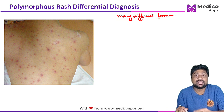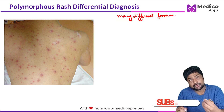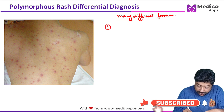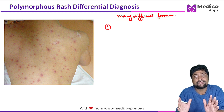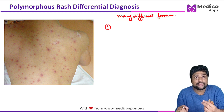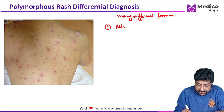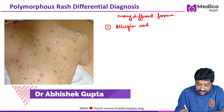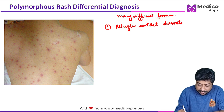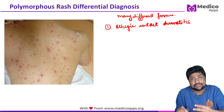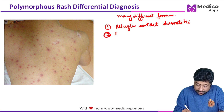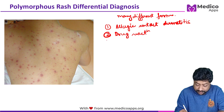Before going into the question, let's look at the differential diagnosis for polymorphous rash in general — not just for this case, but what should come to mind whenever you see a patient with a polymorphous rash. The first important differential is allergic contact dermatitis. When taking a history, you ask questions to narrow down the diagnosis. The second common cause is drug reactions.